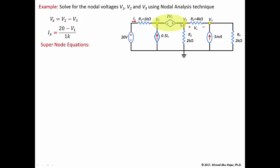The supernode has two equations. The first tells us the voltage difference across the supernode, and the second sums the currents leaving the supernode to zero. For the first equation, we follow the polarities: the plus polarity of the voltage source is at v2 and the negative polarity is at v1, so v2 minus v1 equals the voltage source value.